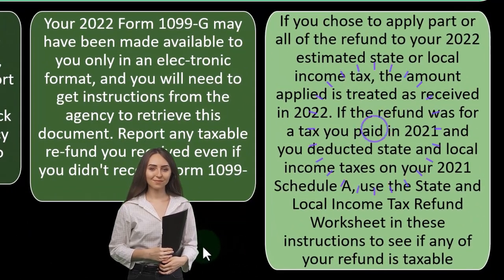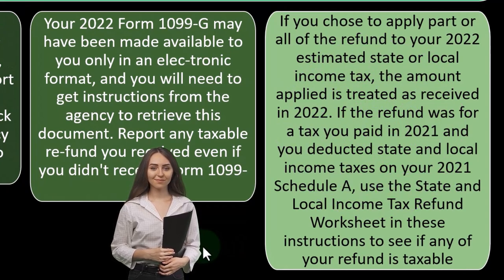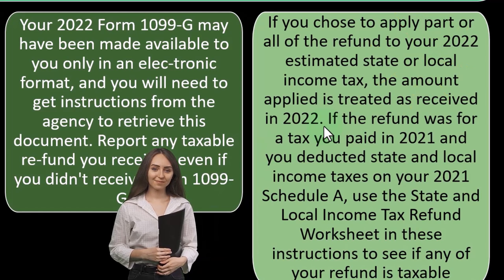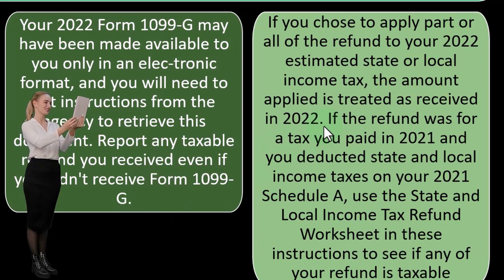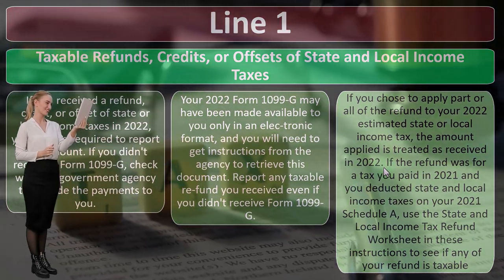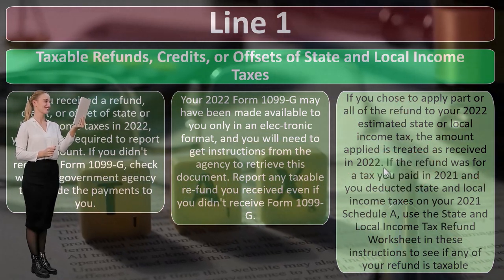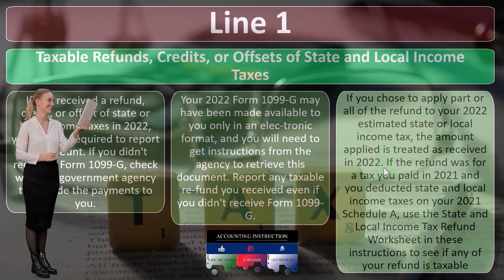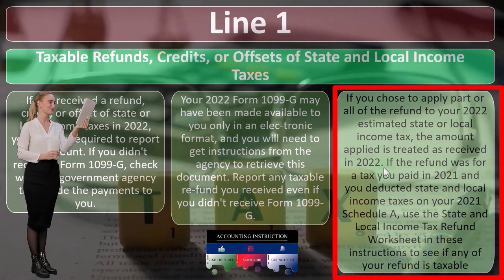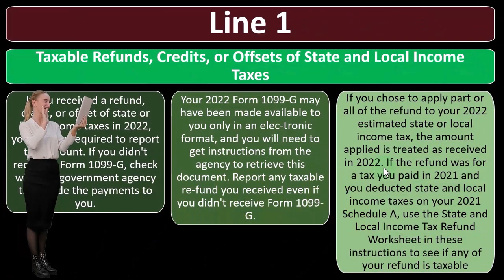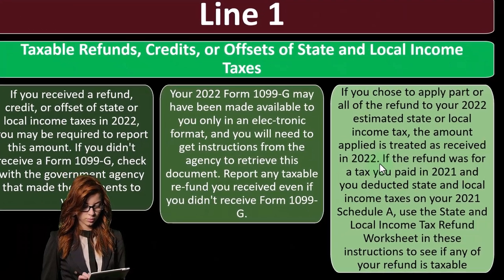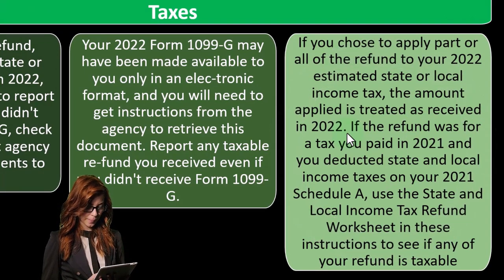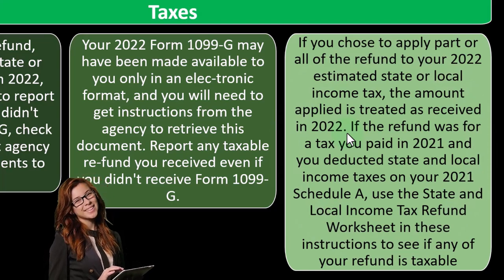If you choose to apply part or all of the refund to your 2022 estimated state or local income tax, the amount applied is treated as received in 2022. For example, if you filed your 2021 tax return and had a state tax refund but applied it to estimated tax payments for the following year rather than receiving it, that's basically the same as getting the refund and then writing a check back in as an estimated payment for 2022. Either way, you might have received income and have to include it.